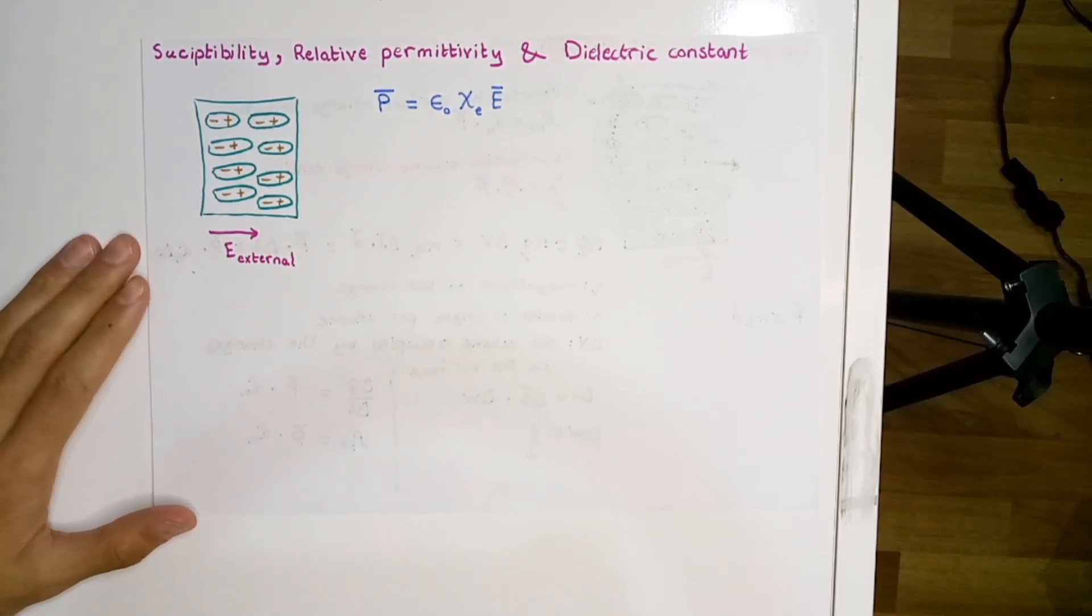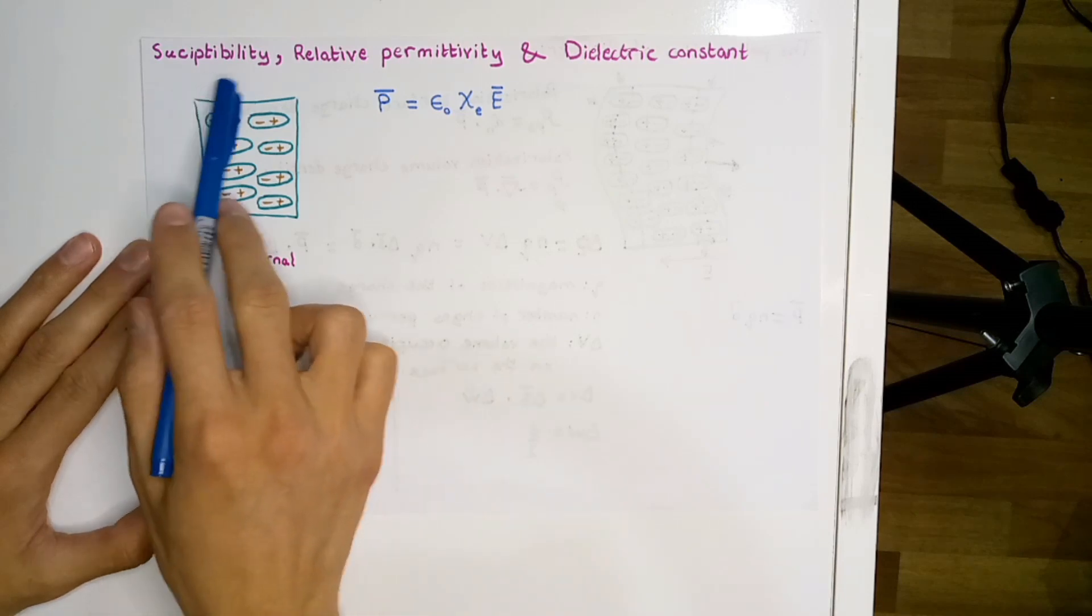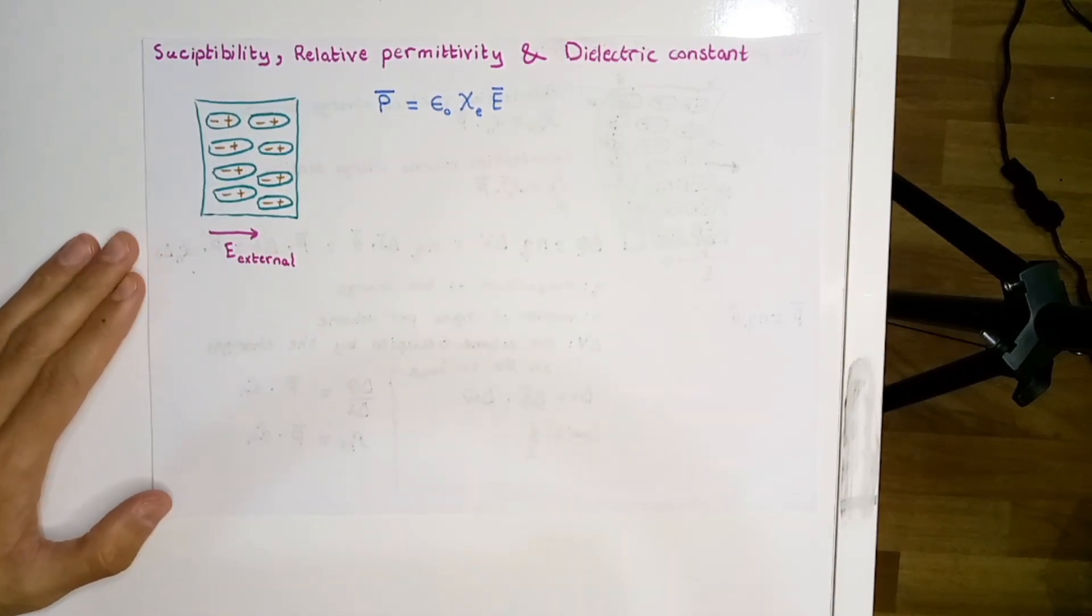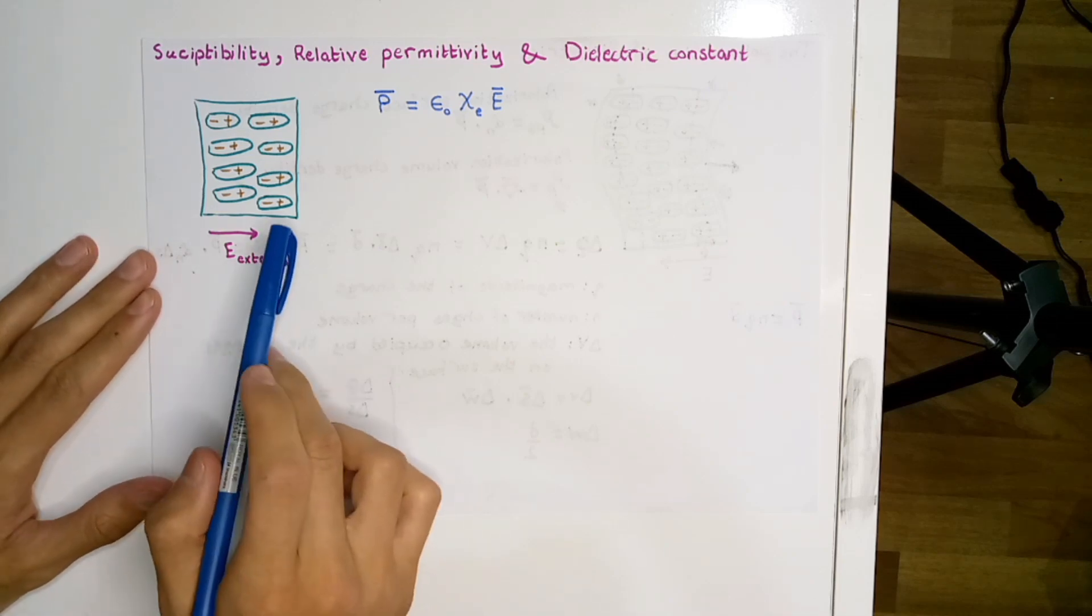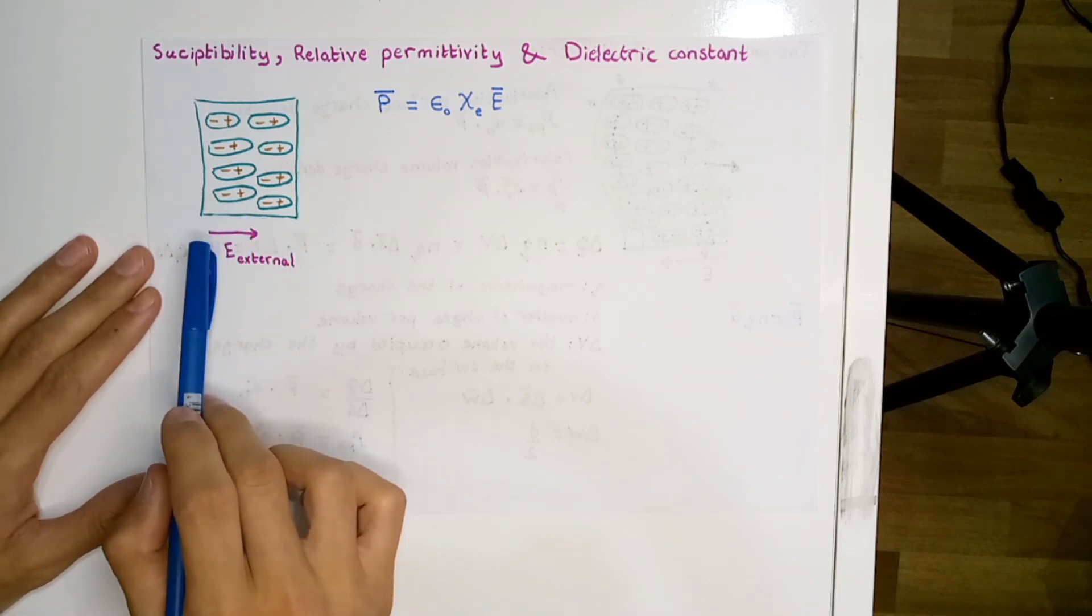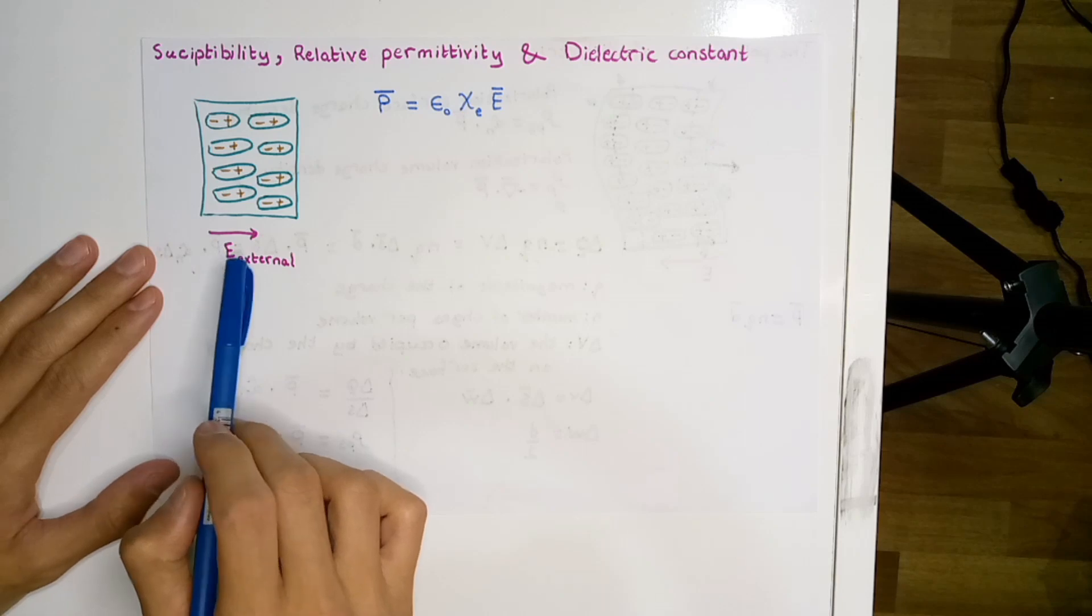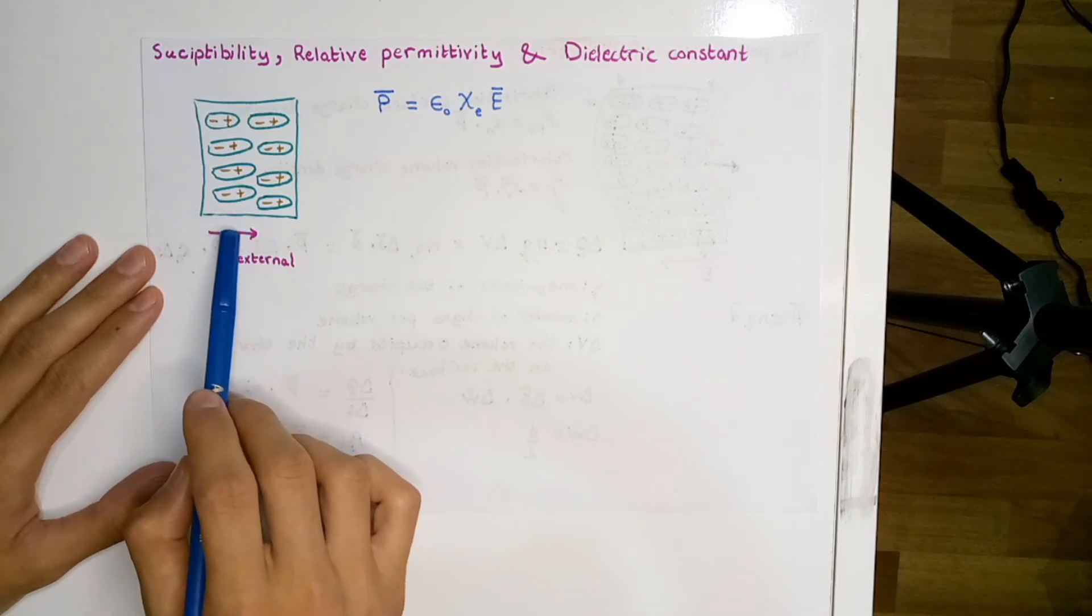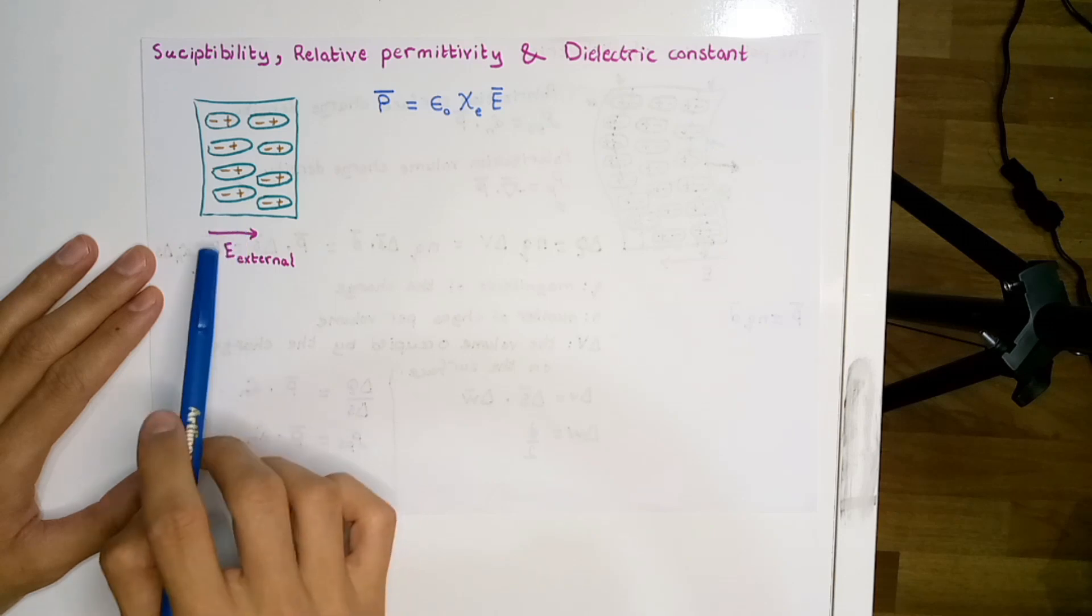Today we are going to talk about susceptibility, relative permittivity, and the dielectric constant. We all know that when an electric field is applied to some dielectric, the molecules align themselves leading to the formulation of polarization.